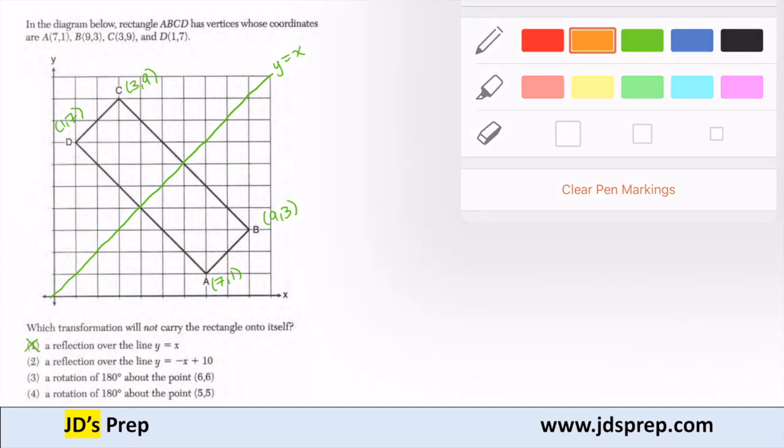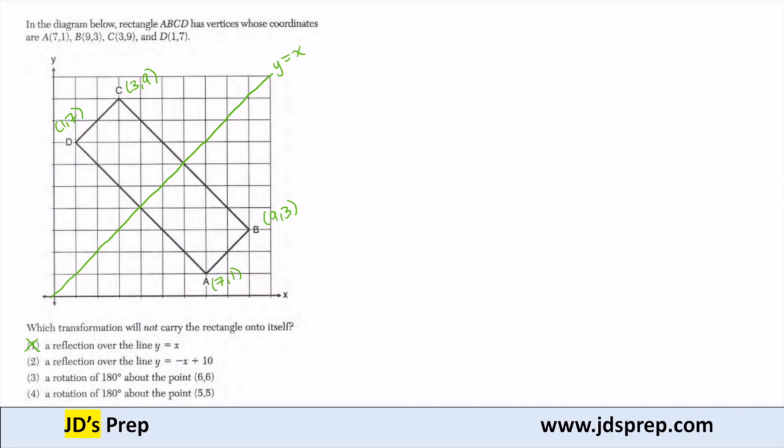Now we look at 2. 2 is a reflection over the line y equals negative x plus 10. So that has a y-intercept of 10 and a slope of negative 1. So here's my y-intercept of 10, slope of negative 1 is that line there. Y equals negative x plus 10. If I reflect over that orange line, I'm going to get the same rectangle. My rectangle is symmetric around that, so it can't be option 2.